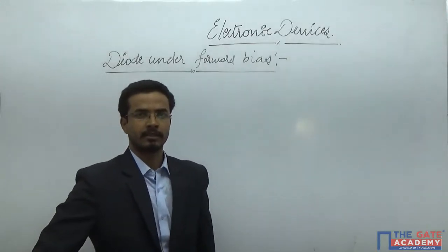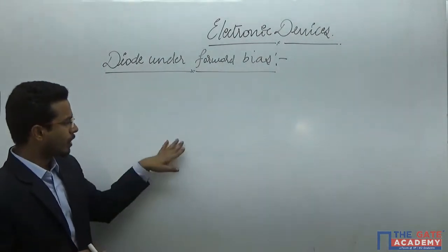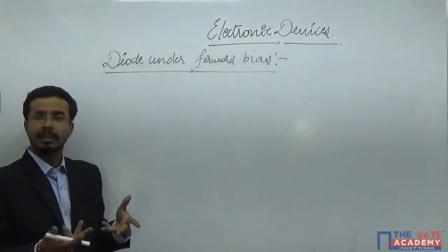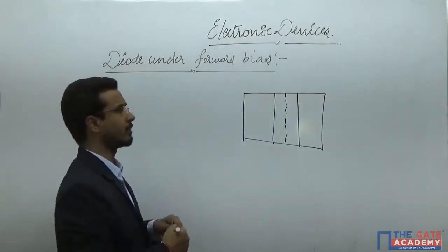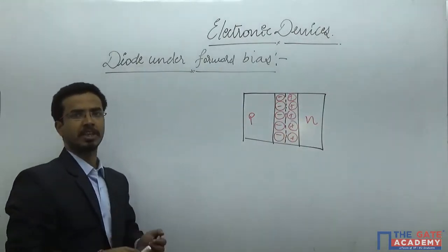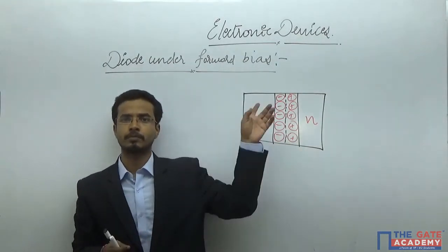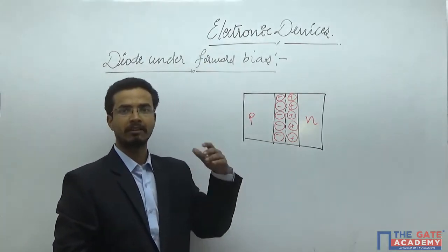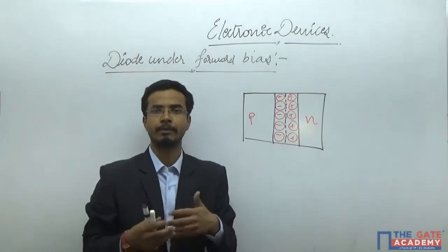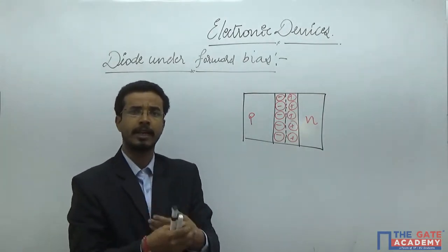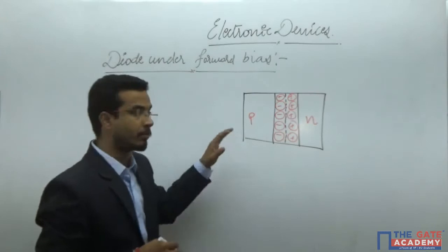Welcome to this class. In this class we will learn the diode under forward bias. Up to now we have discussed the diode in equilibrium condition, where two types of charge carriers form the depletion region. In equilibrium, the process starts with diffusion and ends with drift. When diffusion and drift become equal but in opposite directions, the net motion of charge carriers is zero and the diode is in equilibrium.